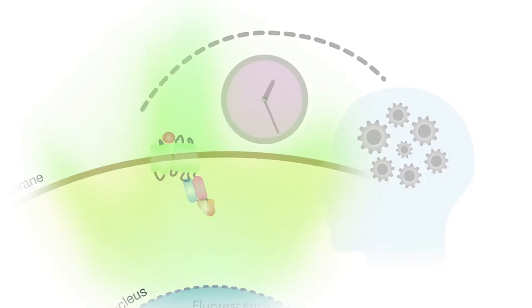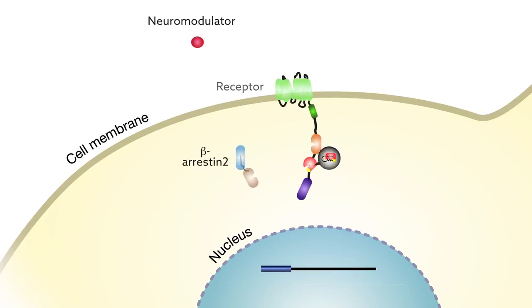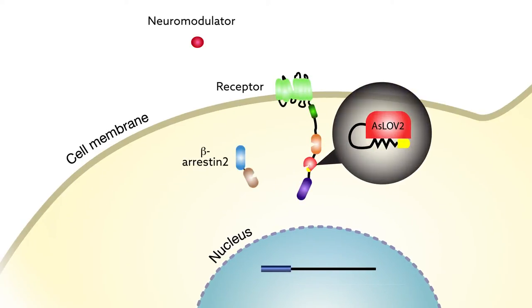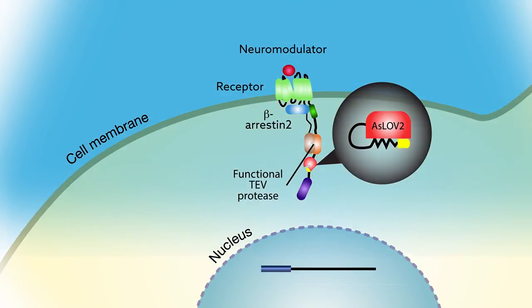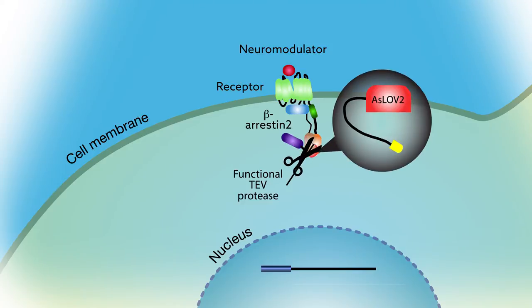The researchers overcame this limitation by adding an external, light-controlled switch to existing sensors. With this switch, they could restrict the sensor's activation and its reporting of the neuromodulator's effects to events that occurred when they were shining blue light.